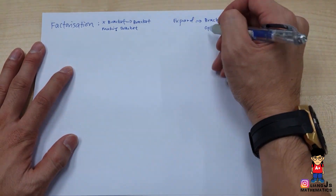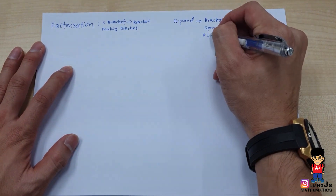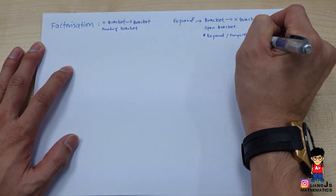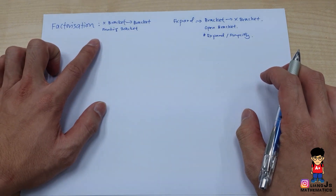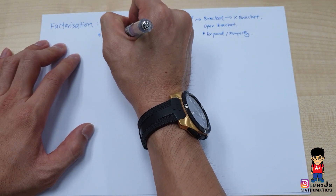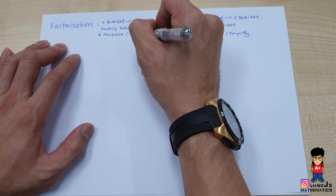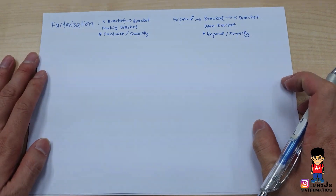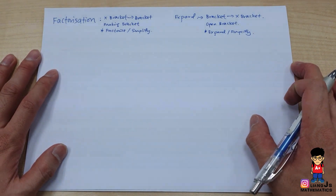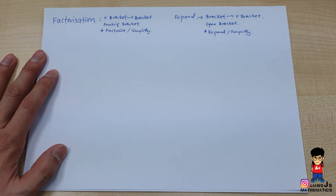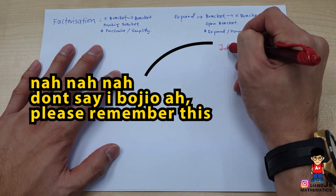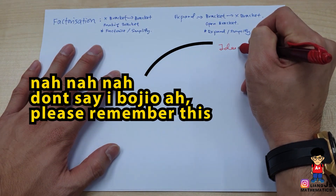When you talk about expanding, normally we expand and then simplify. But when it comes to factorization, we also see the word 'simplify' — it's weird, right? So now I'll start with some very important main ideas. I'll put them to the side because I'll be using them when I do the factorization.